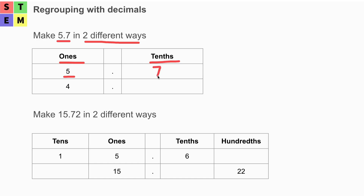So at the tenths place we have seven, giving us 5.7 — no change there. On the second row, we have four at the ones place. So from five, there is one missing from the ones place. To fill in the tenths place, we move that one from the ones place to the tenths place, which equals 10 over 10. So we are going to add an additional 10 to the tenths place.